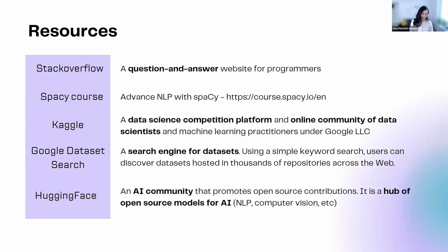You're also going to need datasets. Keep in mind Google Dataset Search — you use a keyword search and can get datasets hosted in thousands of repositories across the web. Also, HuggingFace is an AI community and hub of open source models — you can get a lot of open source models here, so it is worth checking out.